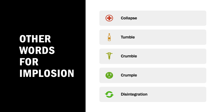Other words for implosion can be collapse, tumble, crumble, and disintegration. Though these words do not explain the procedure or the process of implosion, we can use these words instead of implosion in an article or whenever we are writing an essay.